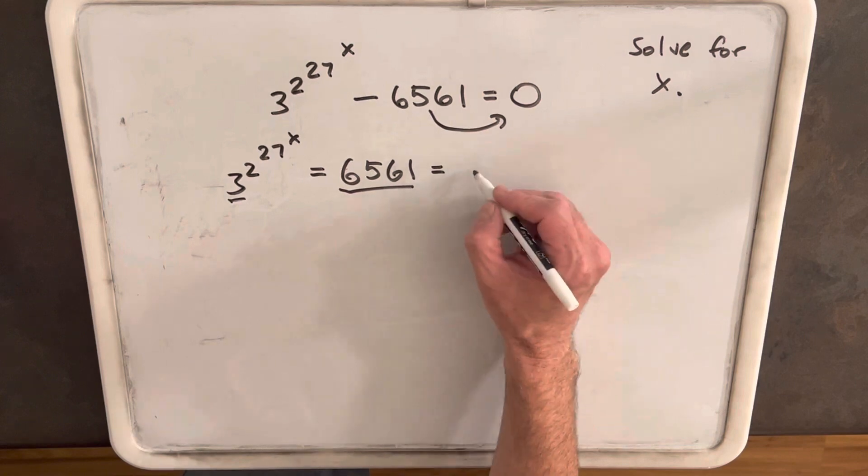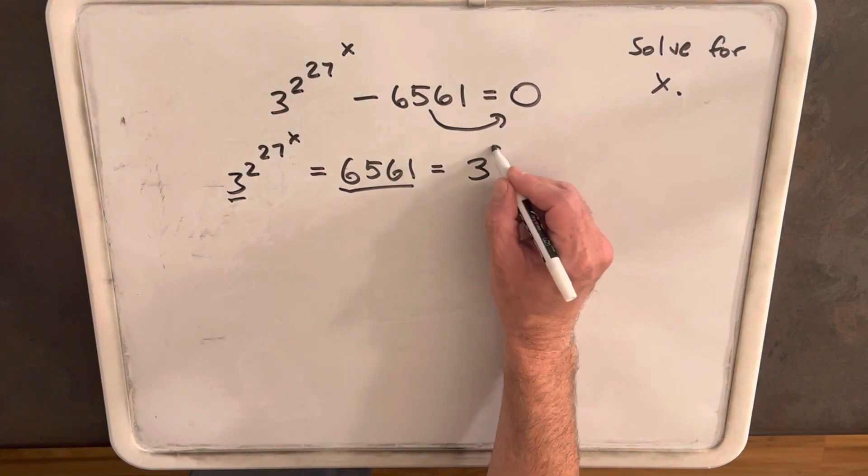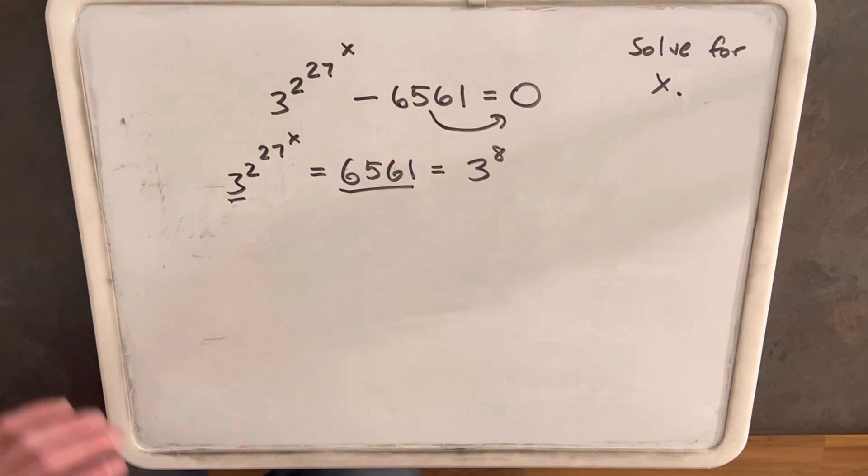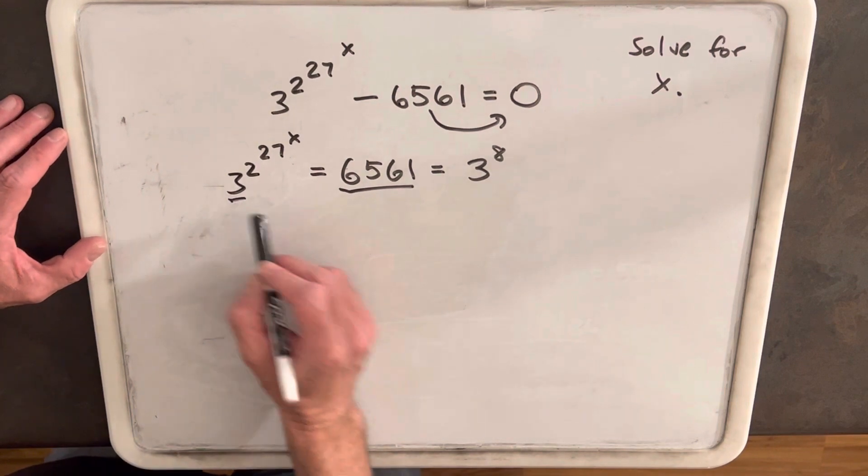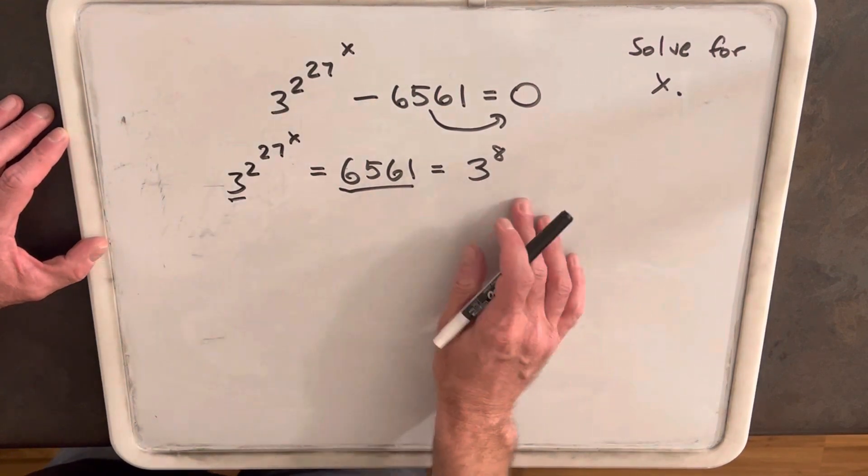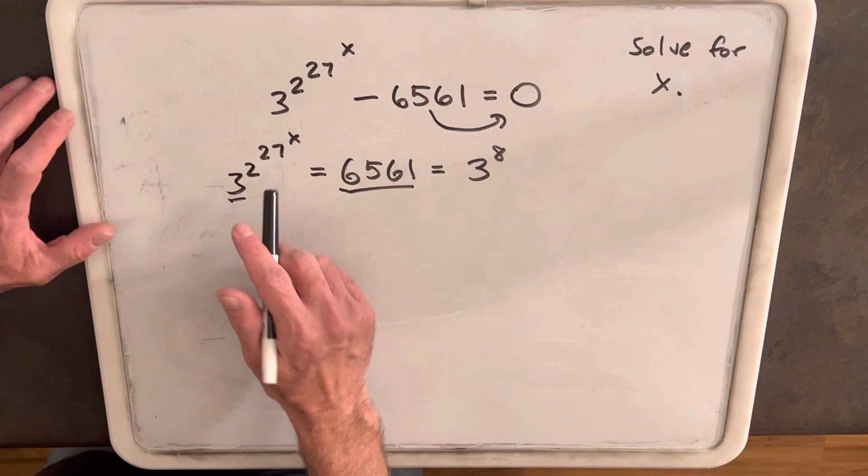Actually, if we did the prime factorization, this is actually 3 to the 8th. But now if we're saying this left expression is equal to 3 to the 8th, they have the same base, so then we can just equate the exponent.